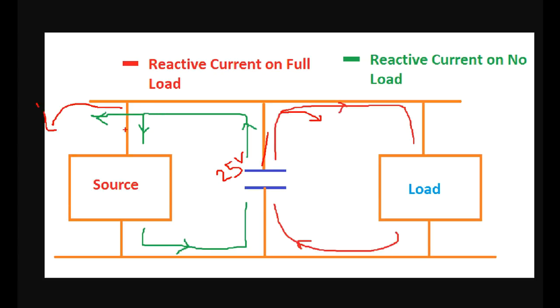We can control the load inside of the source. For example, if you want to control the load, if current goes to the source, it will go to the load — if it goes to the source, it will go to the line and voltage. This is a capacitor bank.